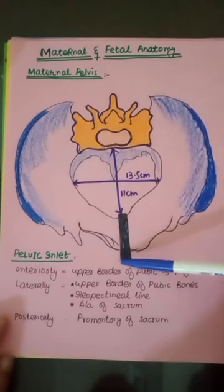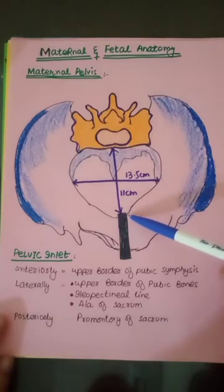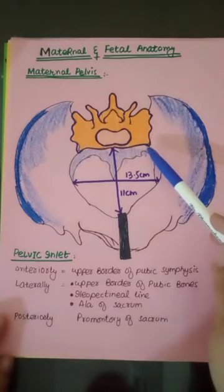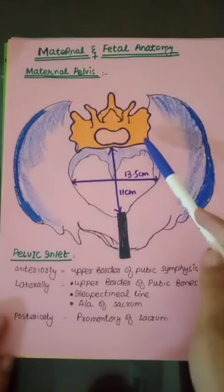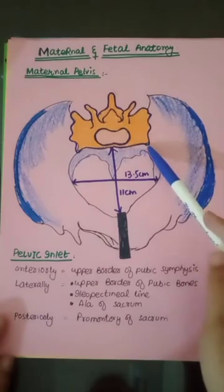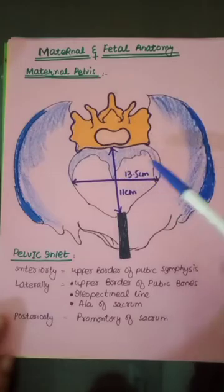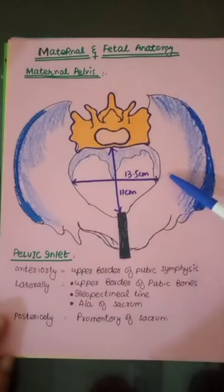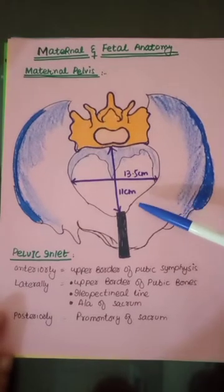The pelvic inlet is bounded anteriorly by the upper border of the pubic symphysis, laterally by the upper borders of the pubic bones and the ileopectineal line, which runs laterally, and posteriorly by the promontory of the sacrum. The transverse diameter is greater at the pelvic inlet — it is 13.5 centimeters — and the AP diameter is less, at 11 centimeters.